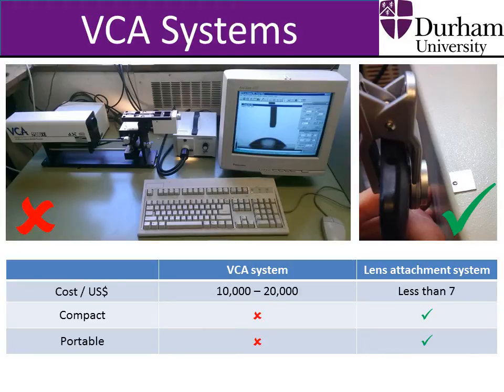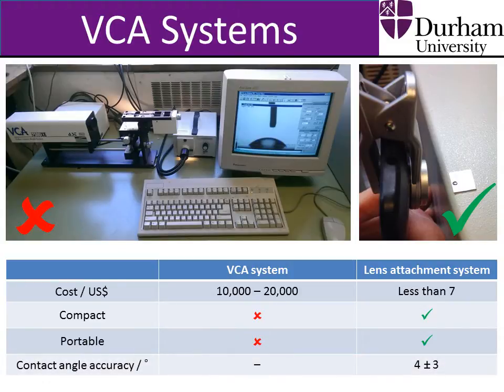In terms of the accuracy of the contact angle measurements using the lens attachment system compared to the VCA system, over a range of different angles from 24 to 135 degrees, the lens attachment system gives results to within 4 degrees plus or minus 3 degrees of those acquired for the same droplets using the VCA system. This small difference in measured contact angle values is more than outweighed by the significant savings in cost and enhanced portability of this system.